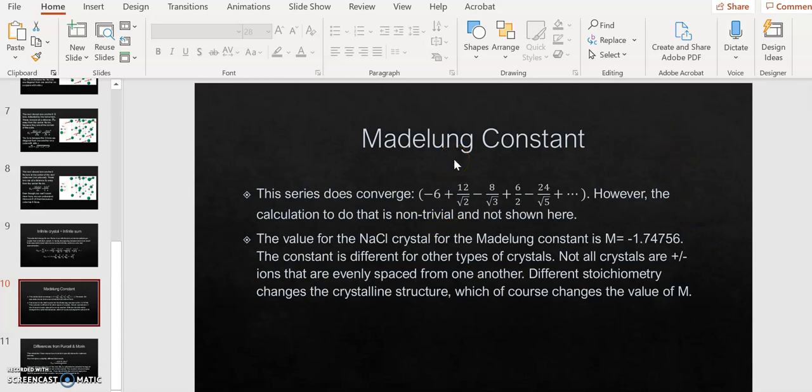This constant would be different for other types of crystals, and the reason for this is that not all crystals have the same stoichiometry as sodium chloride. For example, magnesium chloride has a different stoichiometry, and you have two chlorine ions for every magnesium. This different stoichiometry is going to change the crystalline structure, and if you change the crystalline structure, then that would change the value of the Madelung constant. We picked the simplest possible one to show here, but please understand that there's tables and tables of these things in material science for different crystals that you can look up.